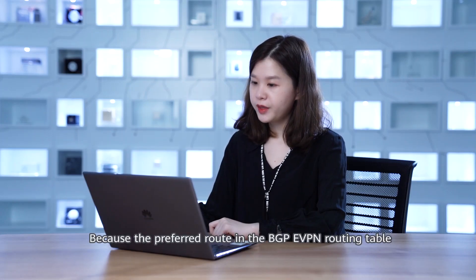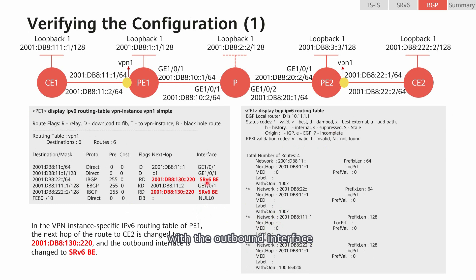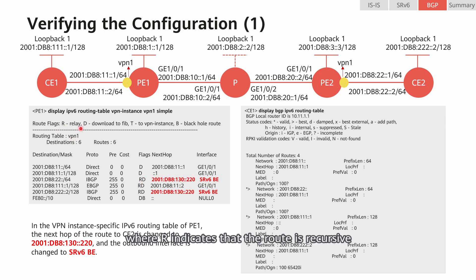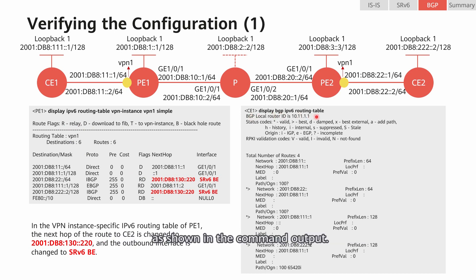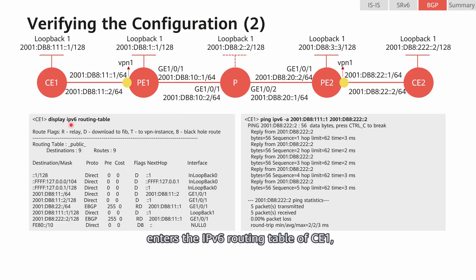Because the preferred route in the BGP EVPN routing table enters the IPv6 routing table, we can see this route in the IPv6 routing table of P1. The route has successfully recursed, with the outbound interface and next-hop being displayed as SRV6BE and the End.DT6 SID of the VPN instance configured on P2, respectively. In addition, the route flag is RD, where R indicates that the route is recursive, and D indicates that the route entry has been delivered to the FIB. The preferred route on P1 is advertised to C1 through the BGP peer relationship, entering the BGP routing table of C1. The preferred BGP route on C1 then enters the IPv6 routing table of C1.